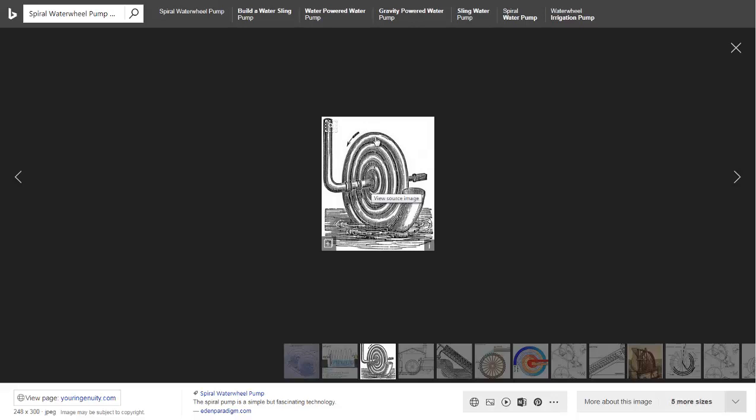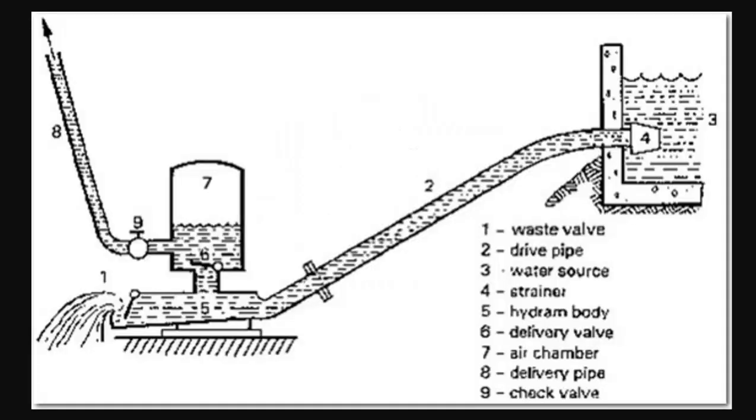And then basically the highest point on the screw is the highest point in which you're allowed to pump it. Now there is one other source of pumping water without electricity, that's basically a windmill. You set up a windmill irrigation system and it will pump water up to about the highest point where the windmill is at.